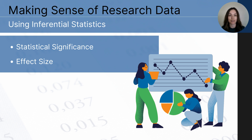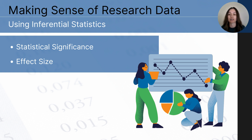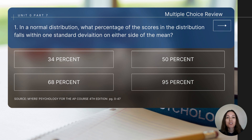Another important concept in inferential statistics is effect size. Effect size helps us understand how big or important the results are, beyond just whether they are statistically significant. For example, comparing boys and girls: a large effect size means there is a noticeable difference in results between the groups, while a small effect size means the difference is not very noticeable. In summary: statistical significance tells you if a difference or relationship is likely real and not due to chance, while effect size tells you how big or important that difference or relationship is.